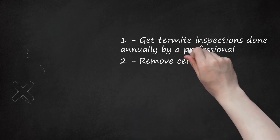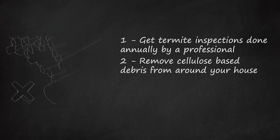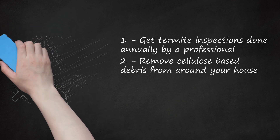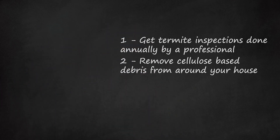Step 2: Remove cellulose-based debris from around your house. If you have any sort of organic material made of wood around your house, make sure you're disposing of it. The longer it's allowed to stay out and gain moisture, the more likely it will attract termites to your location. You can make compost out of your landscaping trimmings. Breaking it down will prevent termites from infesting the wood. Another alternative is to contact your local municipality and ask about wood recycling in your area.